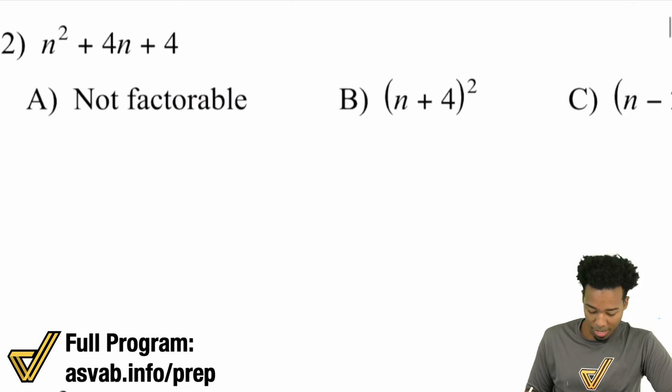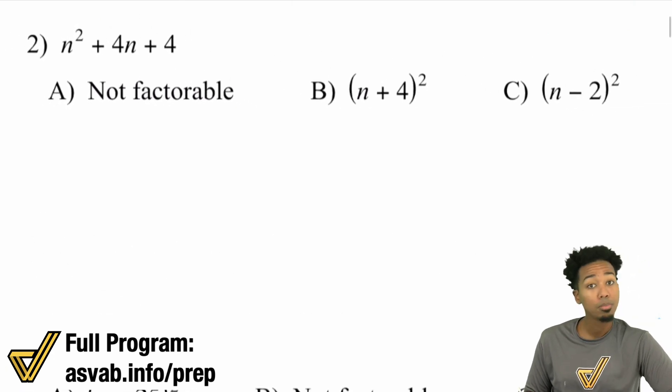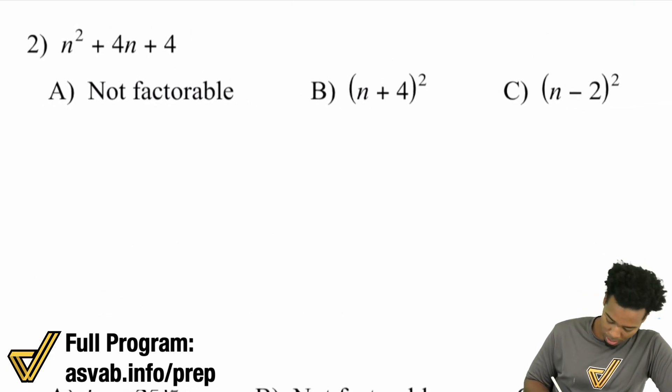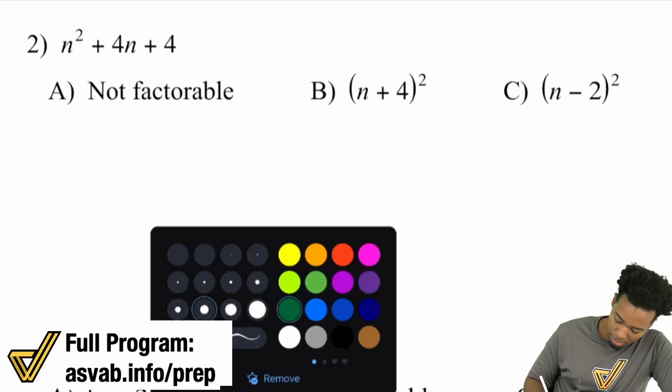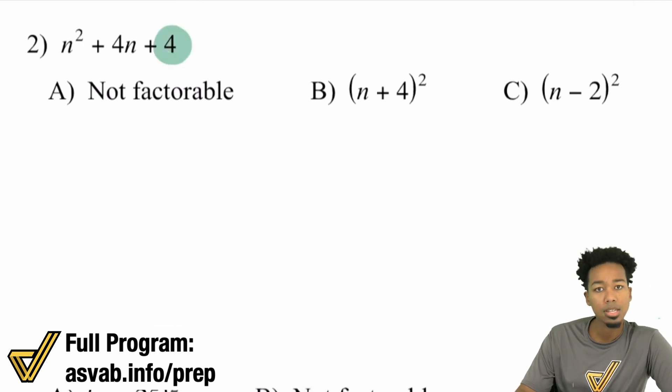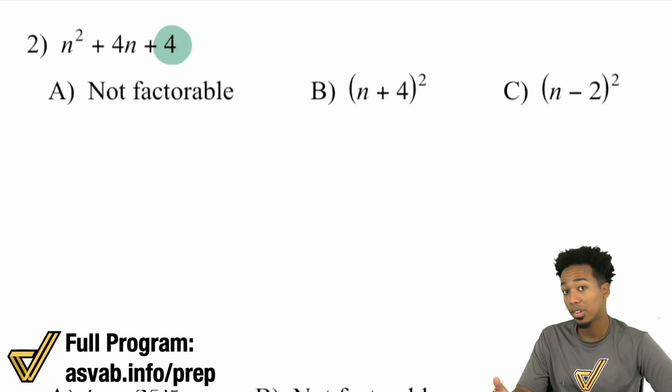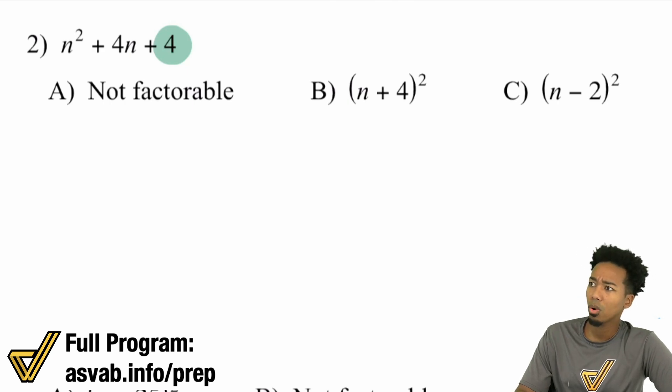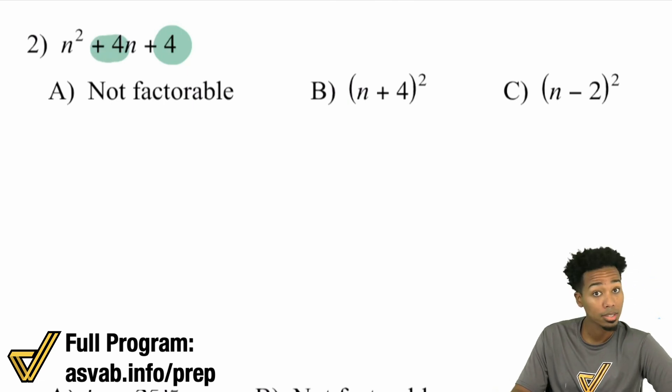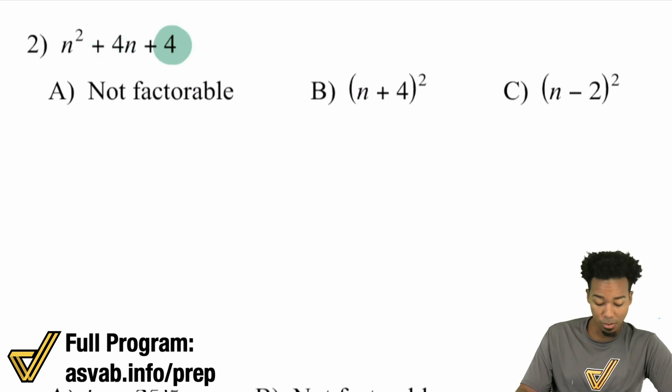So let's go ahead and say we have N squared plus 4N plus 4. If we're looking at this, I notice that we have 4 as the C term. It's a positive 4. So either both the factors are going to be positive or both are going to be negative. But I also know that 4 is 2 times 2. Is 2 plus 2 equal to 4? Yes, it is. So we have ourselves a perfect square trinomial.